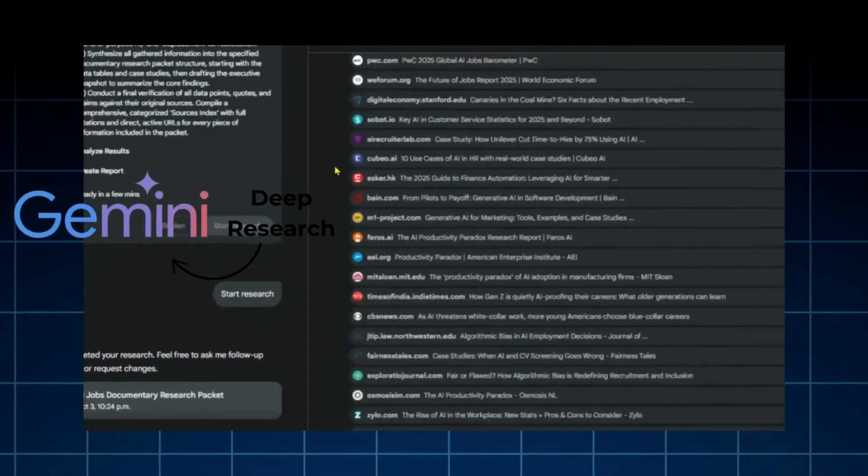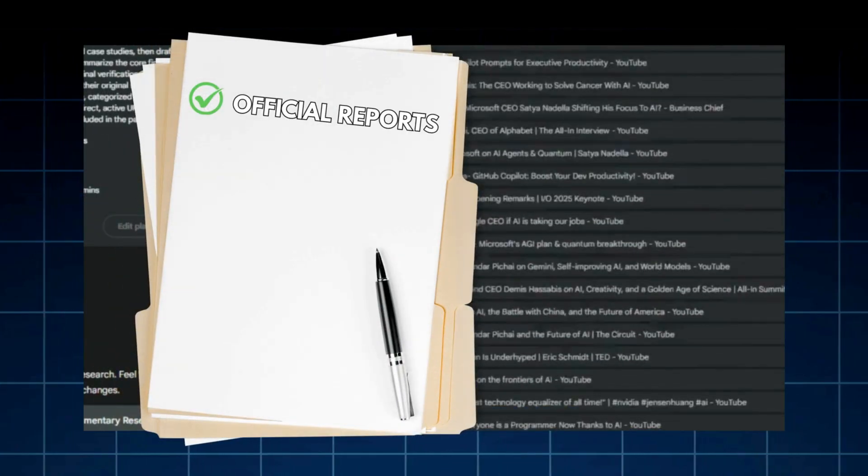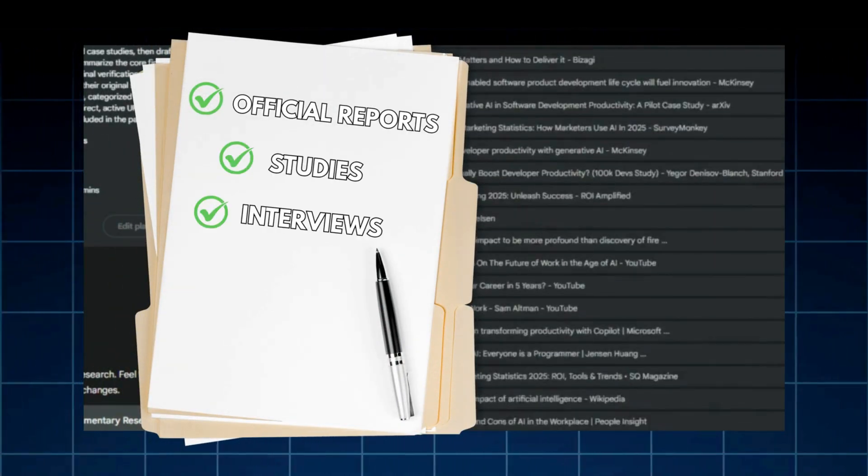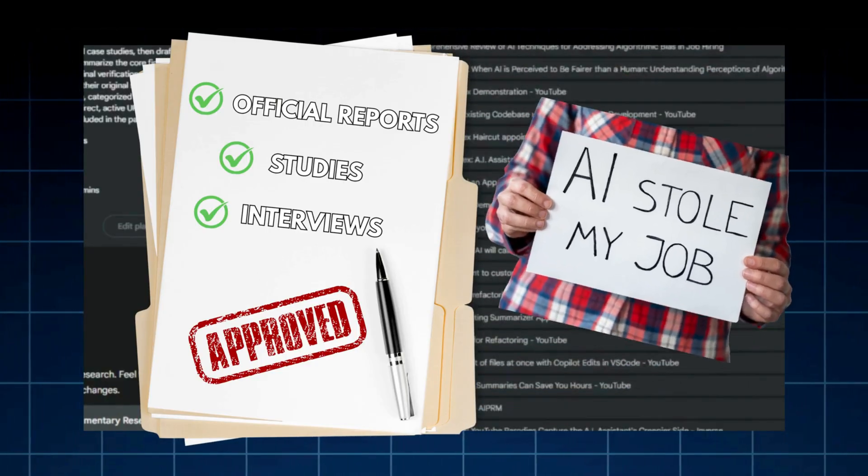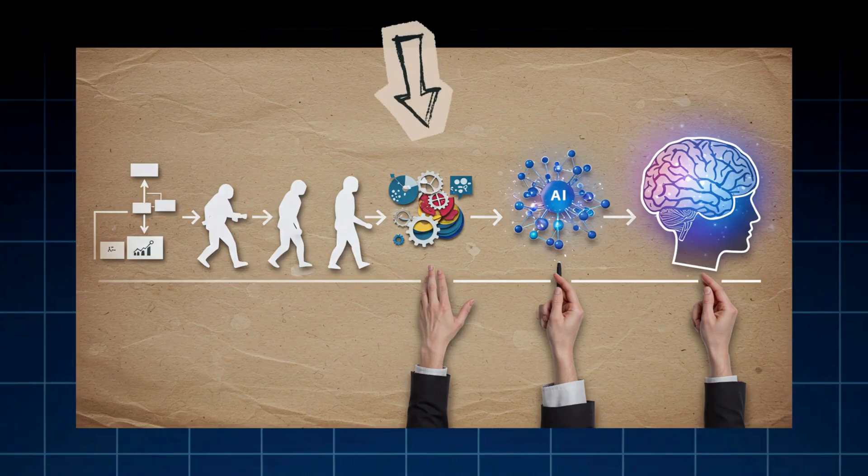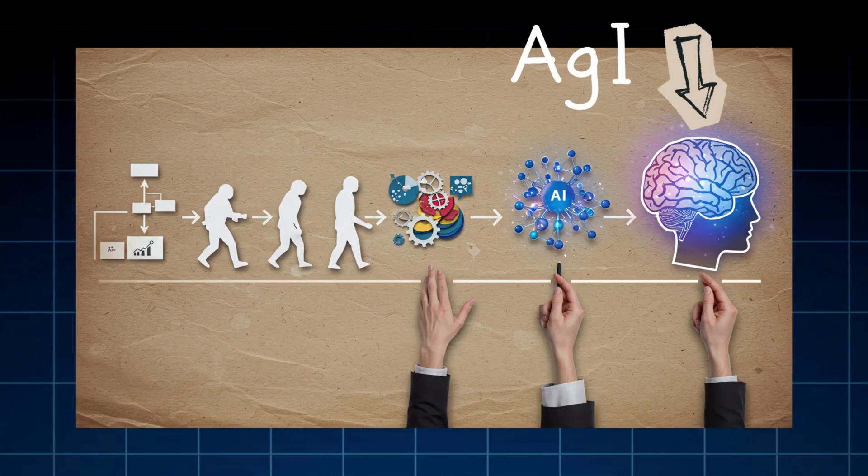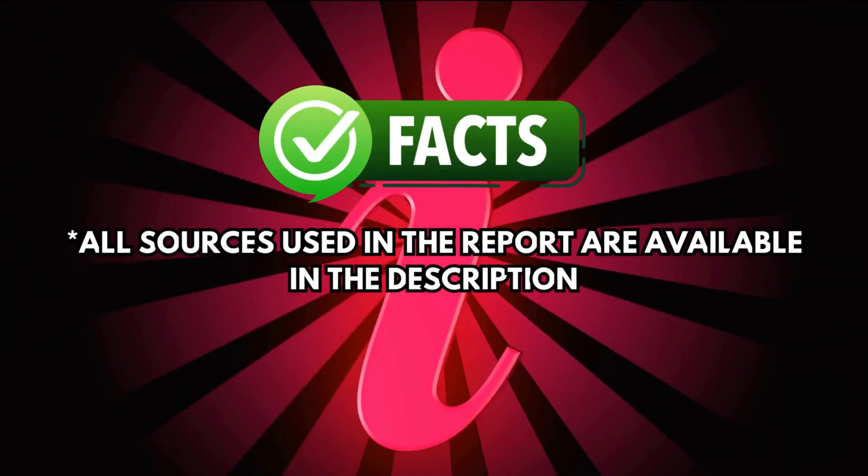I used Google Gemini Deep Research to scan over 130 sources, official reports, studies, and leader interviews, and I turned them into one clear story you can trust about the real impact of AI on jobs. In the next few minutes, we'll see what AI has already changed, what is changing right now, and what to expect in next years. No hype, just facts you can check.